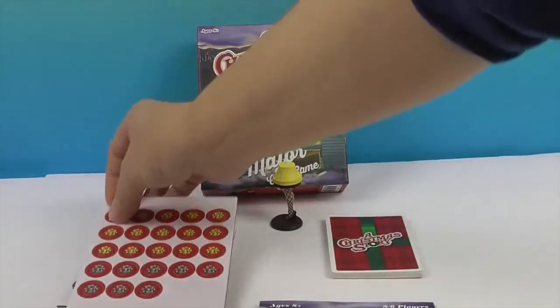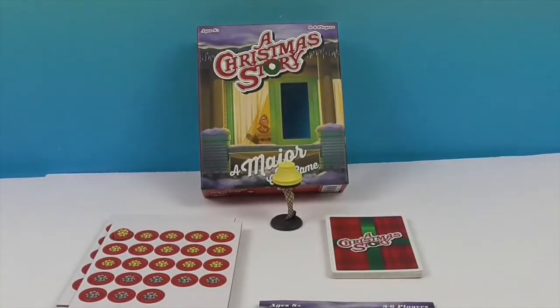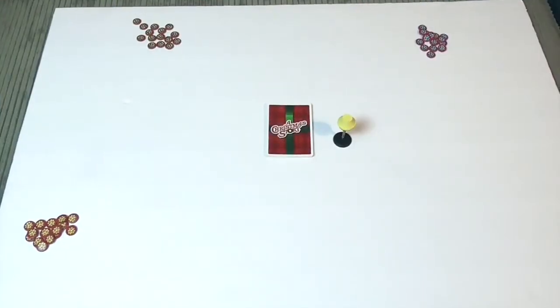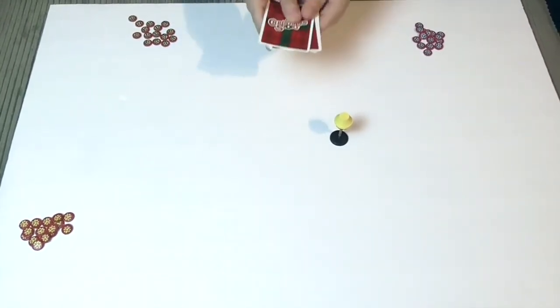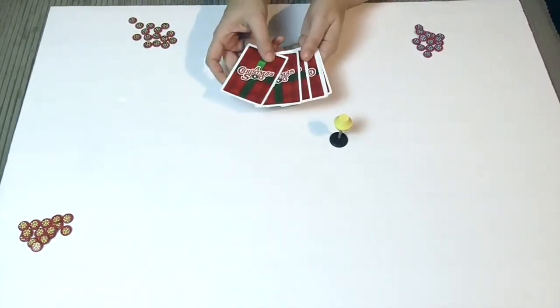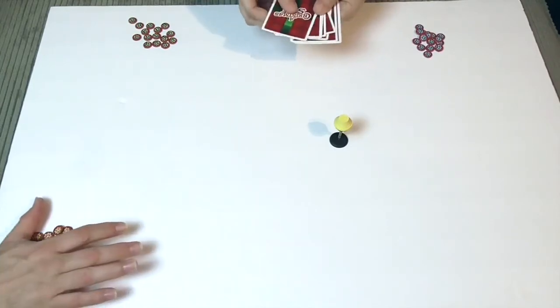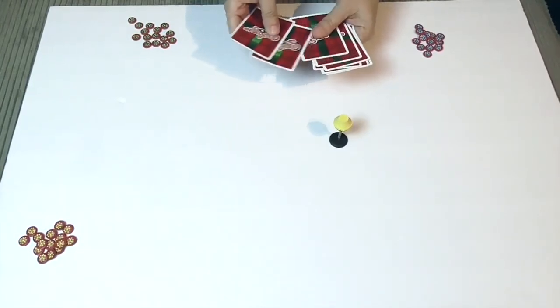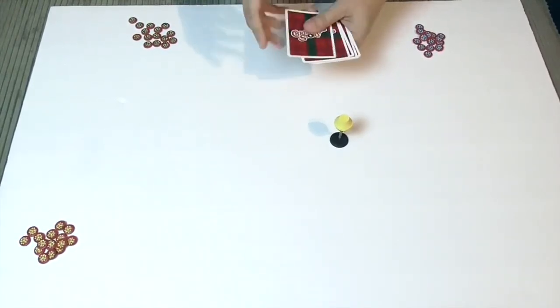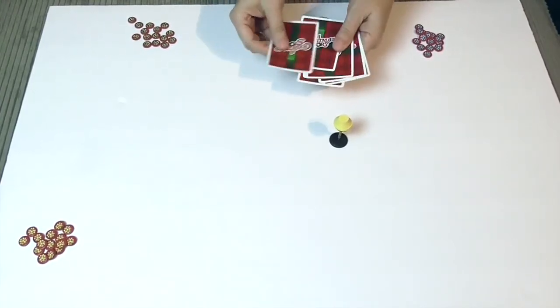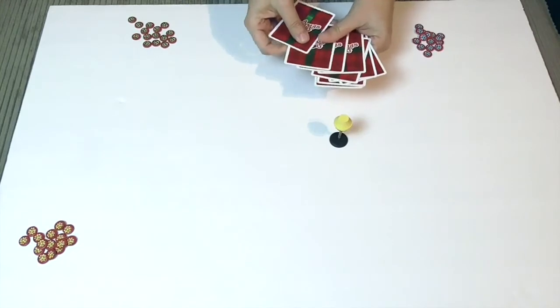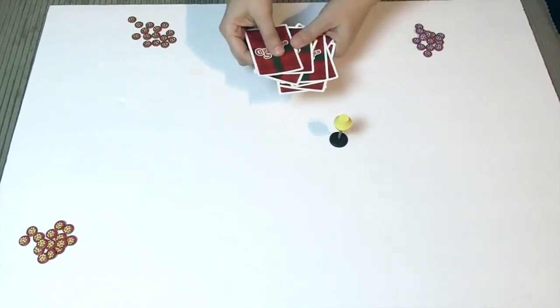All right so it's time to set us up so we can start playing the major card game. Okay so we're all ready for gameplay. We start off with our cards. We have both of our bullies and the decoder pin and the BB gun in here as well as five present cards.